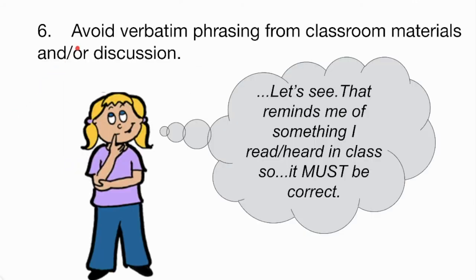Another suggestion is to work to avoid verbatim phrasing from classroom materials or discussion in our distractors. Let's say our correct answer is A, but in one of our distractors — B, C, or D — we include a phrase that we talked about quite a bit in class. Even though a student might think A is the correct answer, they often second-guess themselves because they think, 'That reminds me of something I read or heard in class, so it must be correct.'